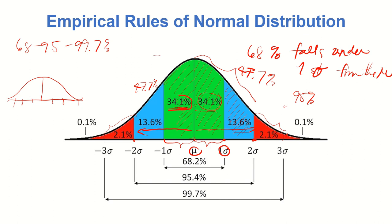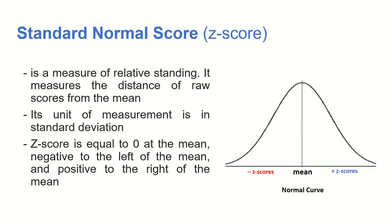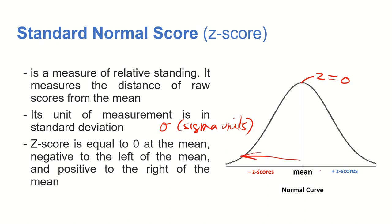To find the area under the normal curve, we first convert raw scores into standard normal scores or Z-scores. A Z-score is a measure of relative standing — it measures the distance of raw scores from the mean, and the unit of measurement is the standard deviation (sigma units). We can also read this as sigma units or standard deviation units.